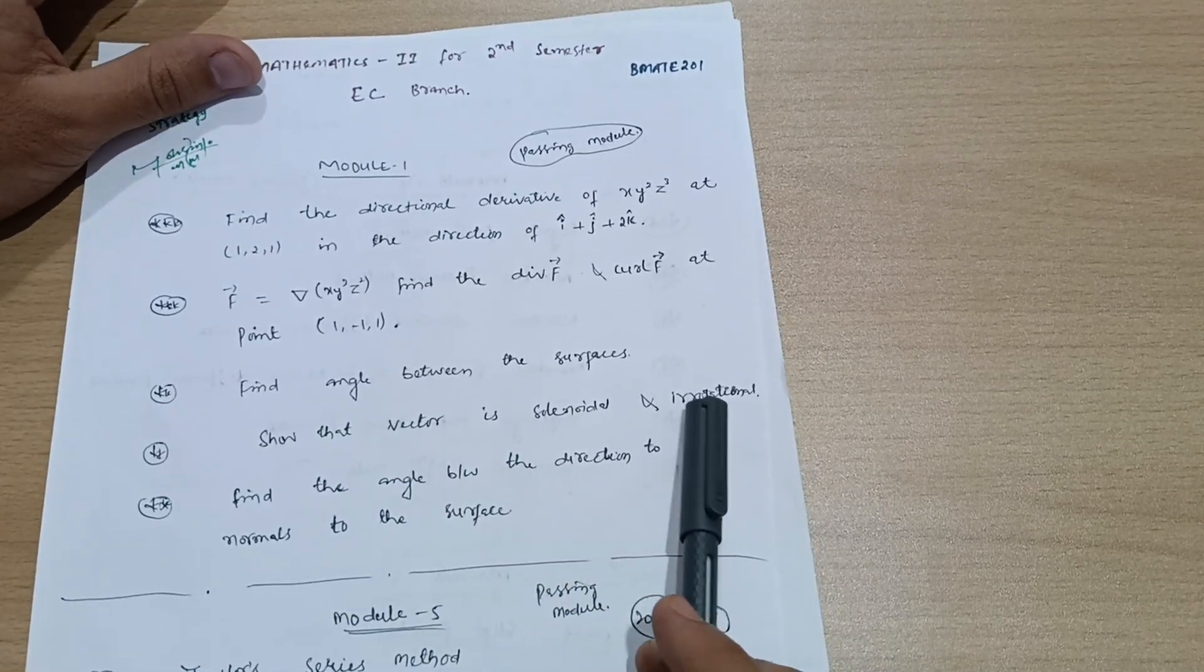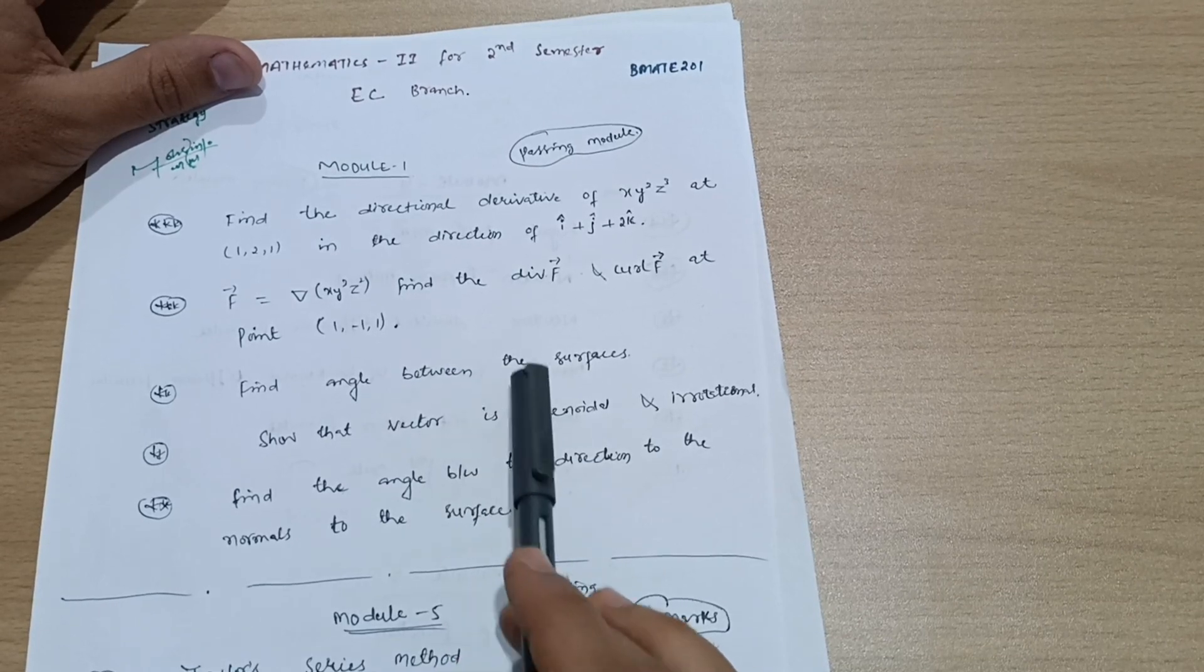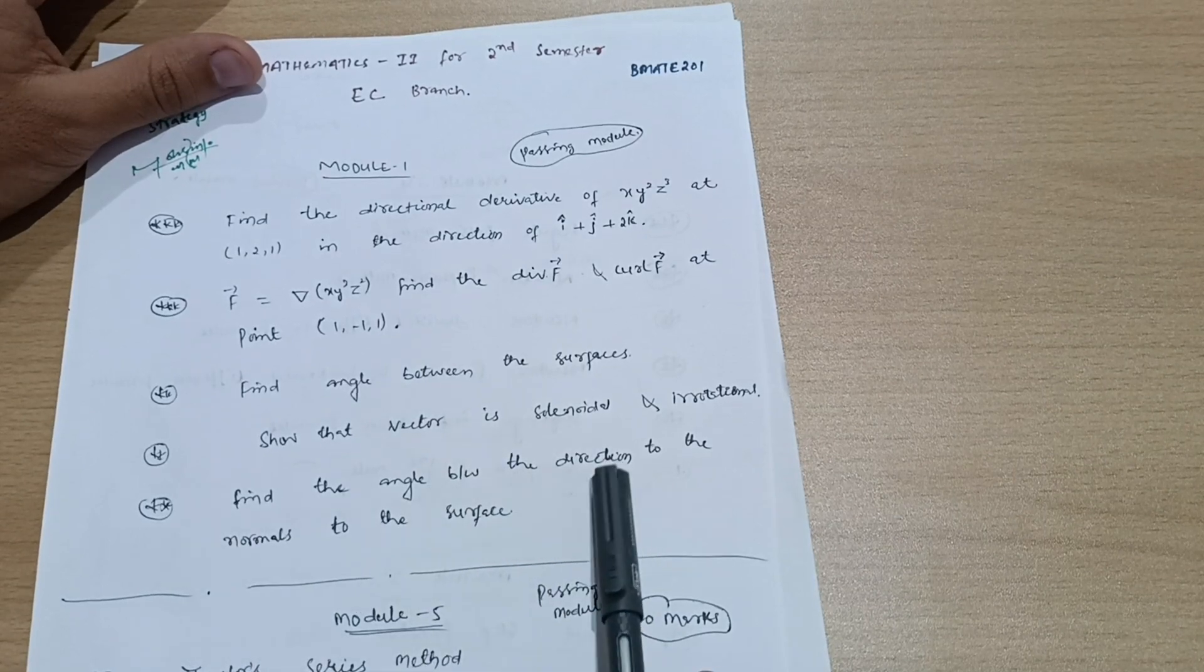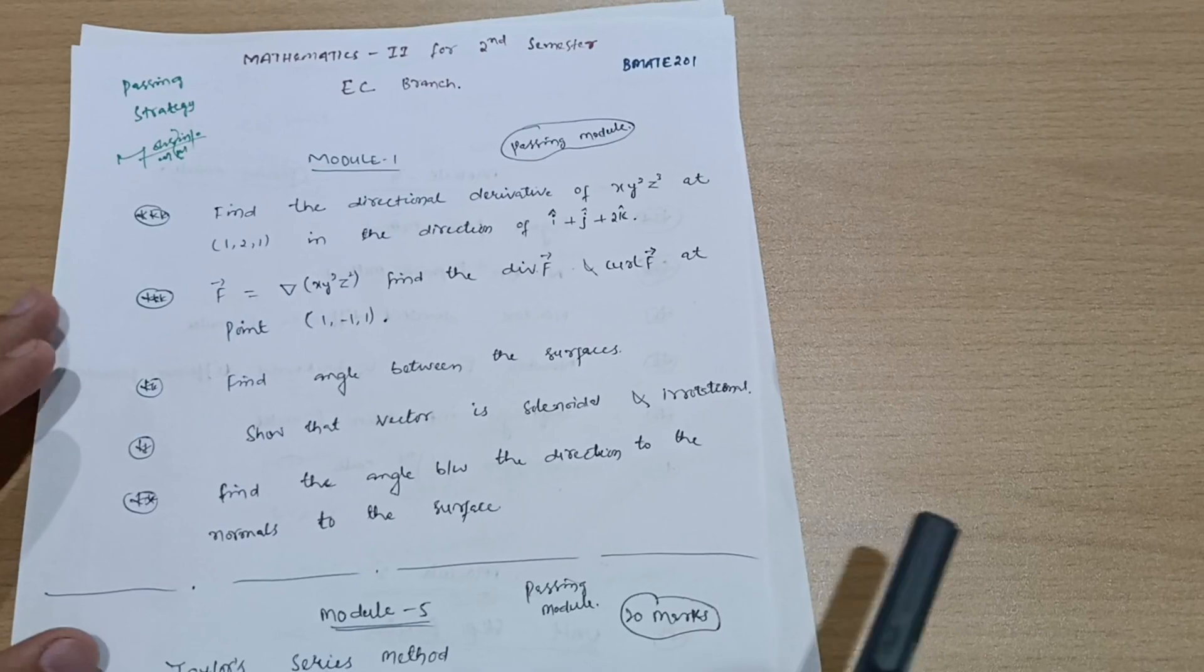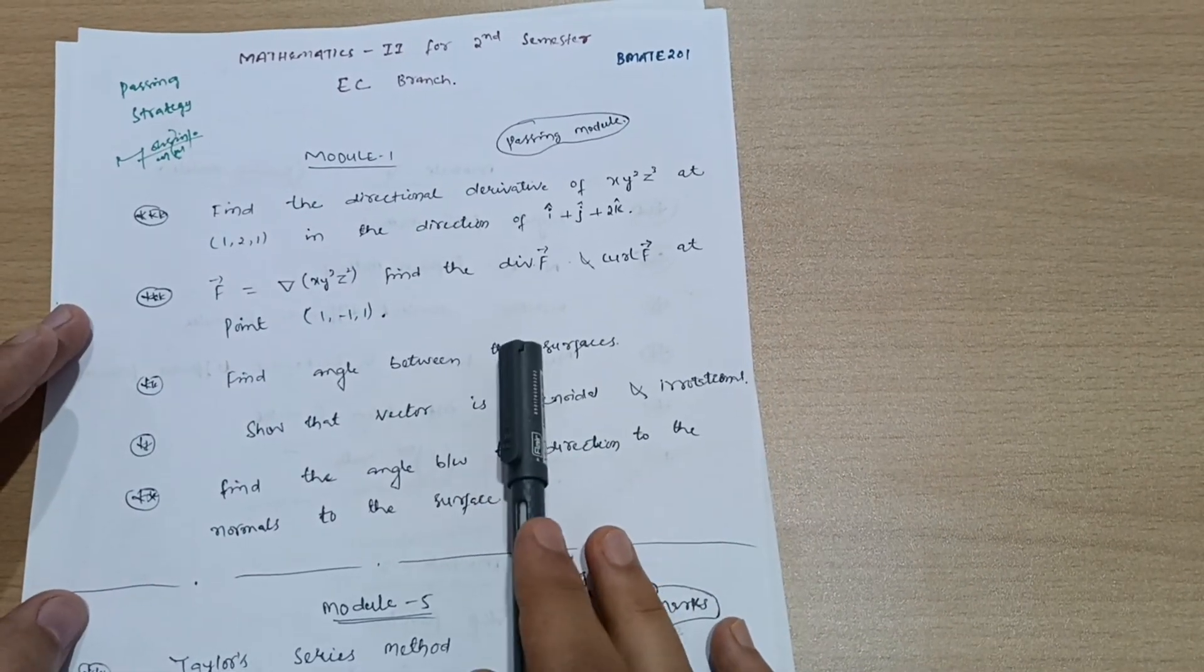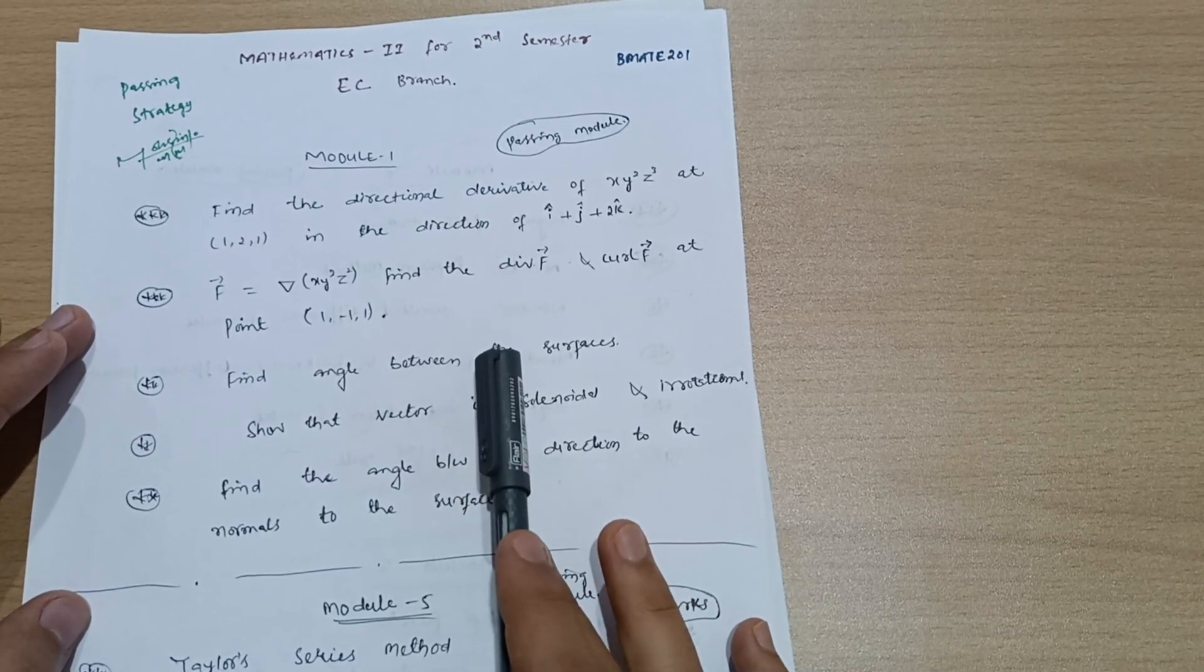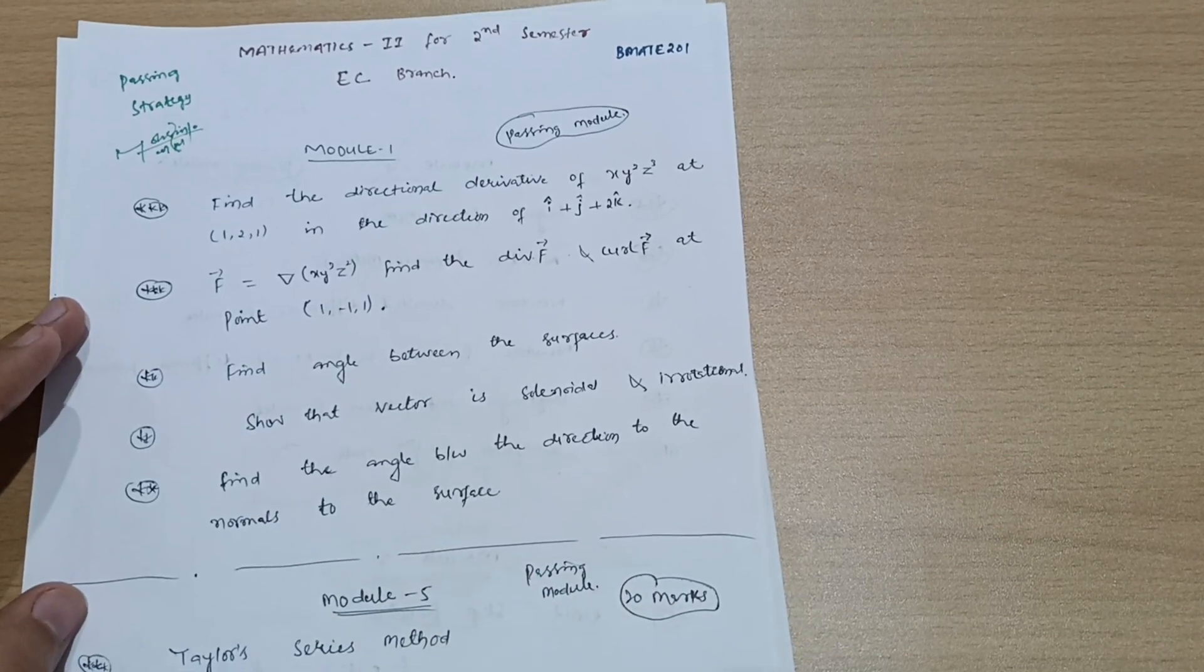You have to practice four questions from each variety, from each topic. Find the angle between the direction to the normals to the surface. These are five concepts from module first - vector calculus. If you cover this much, you will get at least 15 marks, or if you have good concepts, definitely 20 marks.